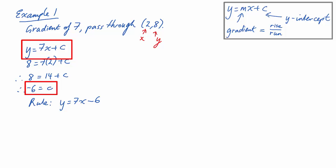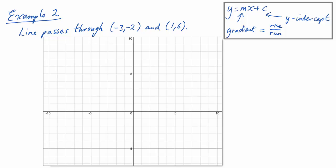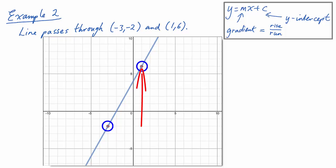Let's now try and find the rule for a straight line passing through two points. We'll find the rule for a line that passes through (-3, -2) and (1, 6). We've got those two points and we'd like to draw a straight line between them and calculate its gradient. For the rise, we've gone from negative 2 up to 6, so that's a rise of 8. For the run, we've gone from negative 3 across to 1, so that's a run of 4.